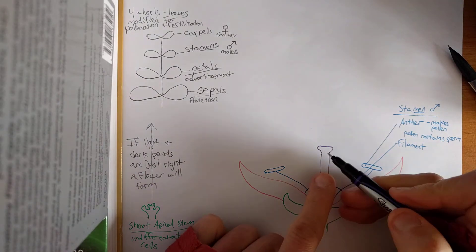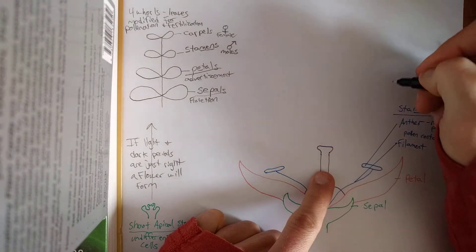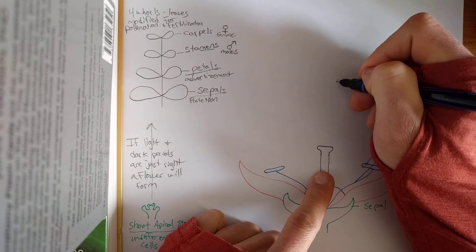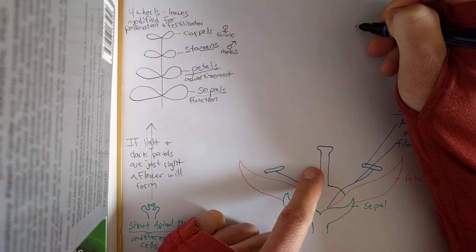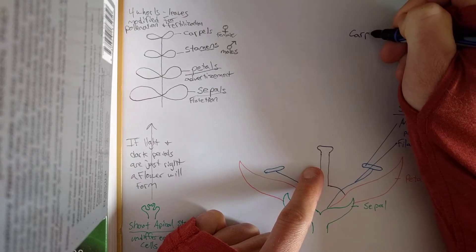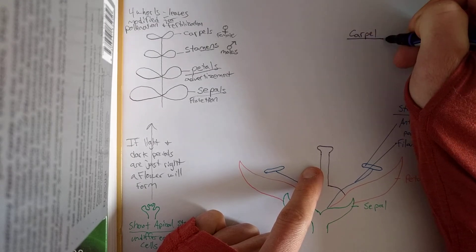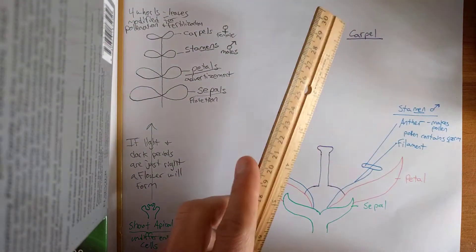Alright. So, I'm gonna get, still use the color purple up here. Can you still see? Yep, still see. So this is the carpal. And the three sub-components.